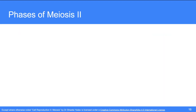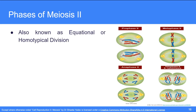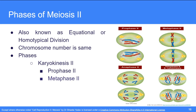Meiosis 2 is the second meiotic division, also known as equational or homotypical division because the chromosome number remains the same as after meiosis 1. It is also divided into karyokinesis and cytokinesis, where karyokinesis is further divided into four phases: prophase, metaphase, anaphase, and telophase.